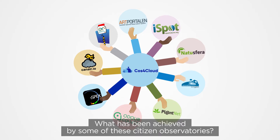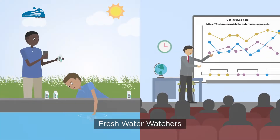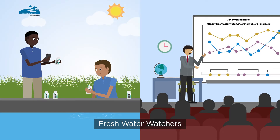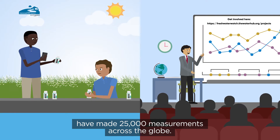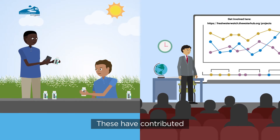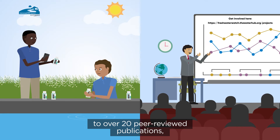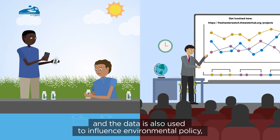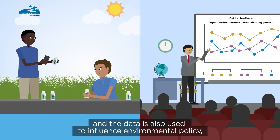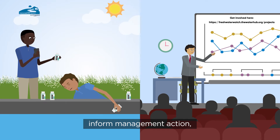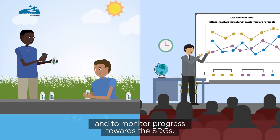Freshwater Watchers have made 25,000 measurements across the globe. These have contributed to over 20 peer-reviewed publications, and the data is also used to influence environmental policy, inform management action and to monitor progress towards the SDGs.